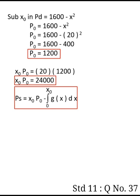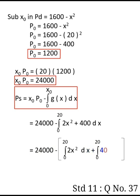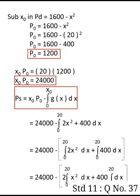For producer surplus, the formula is x naught p naught minus integral from 0 to x naught of g of x dx, where g of x is the supply function. So it's 24,000 minus integral from 0 to 20 of 2x square plus 400 dx.